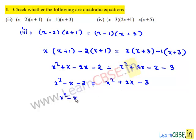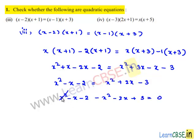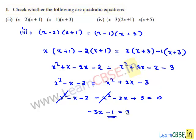Transposing the terms on the right hand side to the left hand side gives minus x squared minus 2x plus 3 equals 0. So x squared and minus x squared cancel. Then minus x minus 2x becomes minus 3x, and minus 2 plus 3 becomes minus 1. So the final equation obtained is minus 3x minus 1 equals 0.